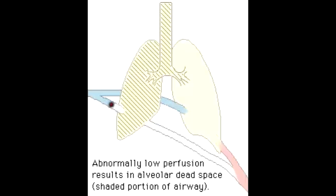Physiologic dead space is the anatomic dead space — the air that remains in the conducting airways — plus the functional dead space. The functional dead space includes areas of alveoli such as in the apex of a healthy lung, because this area does not take part in gas exchange. The apex of a healthy lung is the largest contributor of functional dead space.